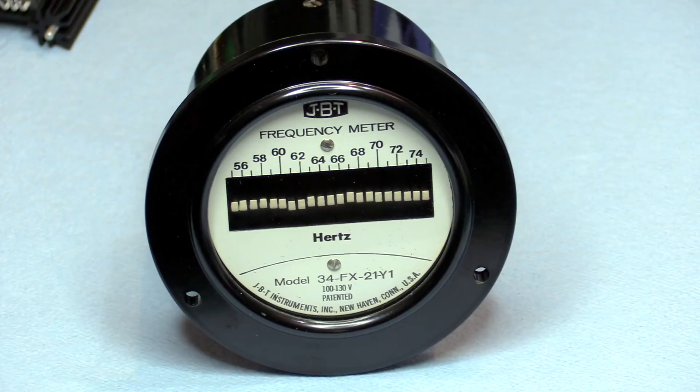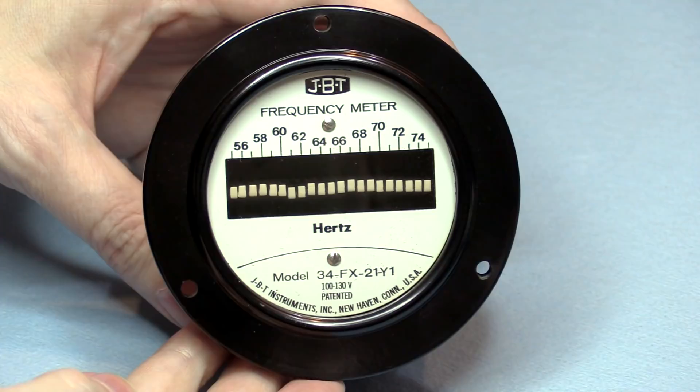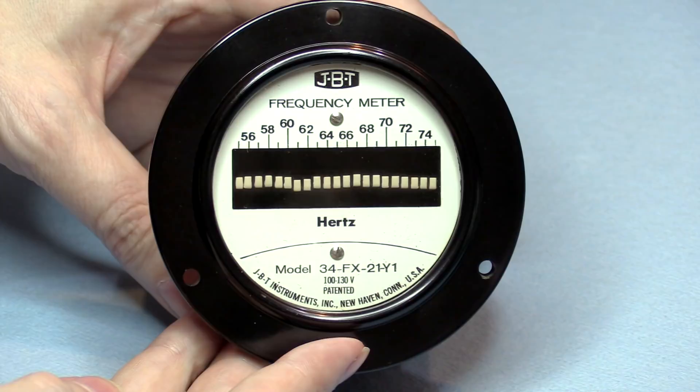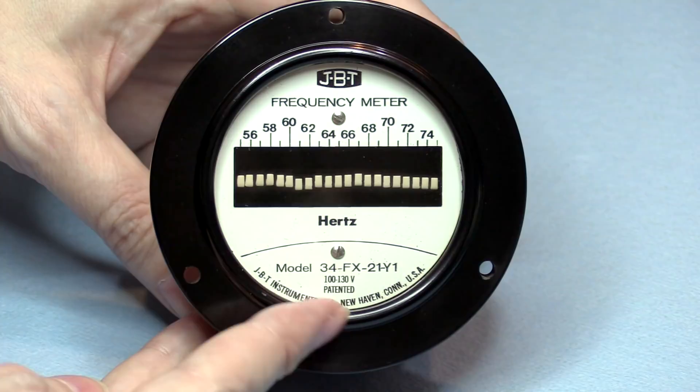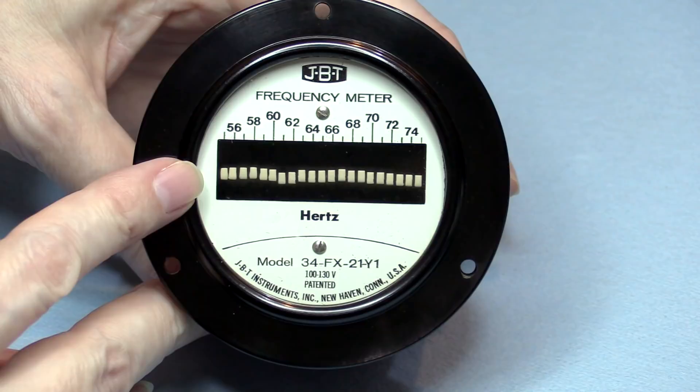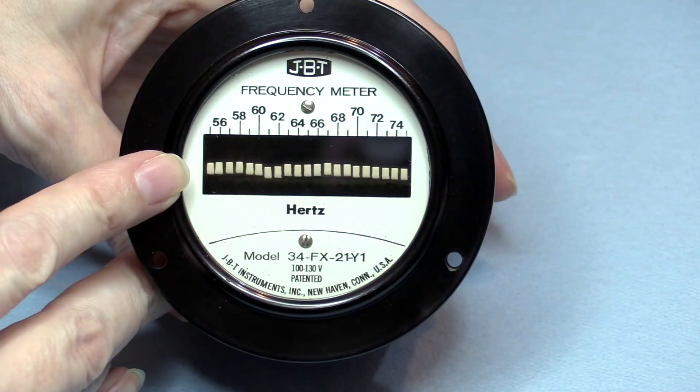Here's the meter close up. It's a JBT frequency meter, patented. Made by JBT Instruments Inc. in New Haven, Connecticut, USA. It operates at 100 to 130 volts and measures the frequency of the line current from 56 to 74 hertz.